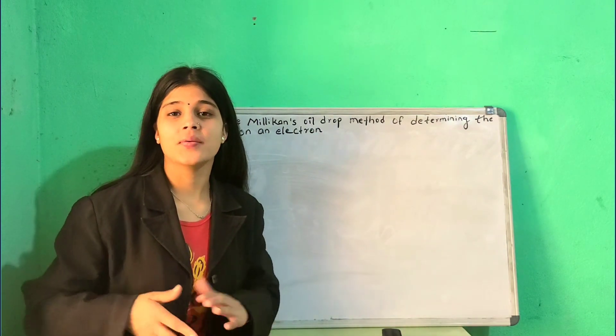The viscous force is 6πηrv plus upthrust equals weight W = mg. The volume of the spherical drop is (4/3)πr³. So the force balance gives: (4/3)πr³ σg + 6πηrv = (4/3)πr³ ρg, where σ is the density of air and ρ is the density of oil.